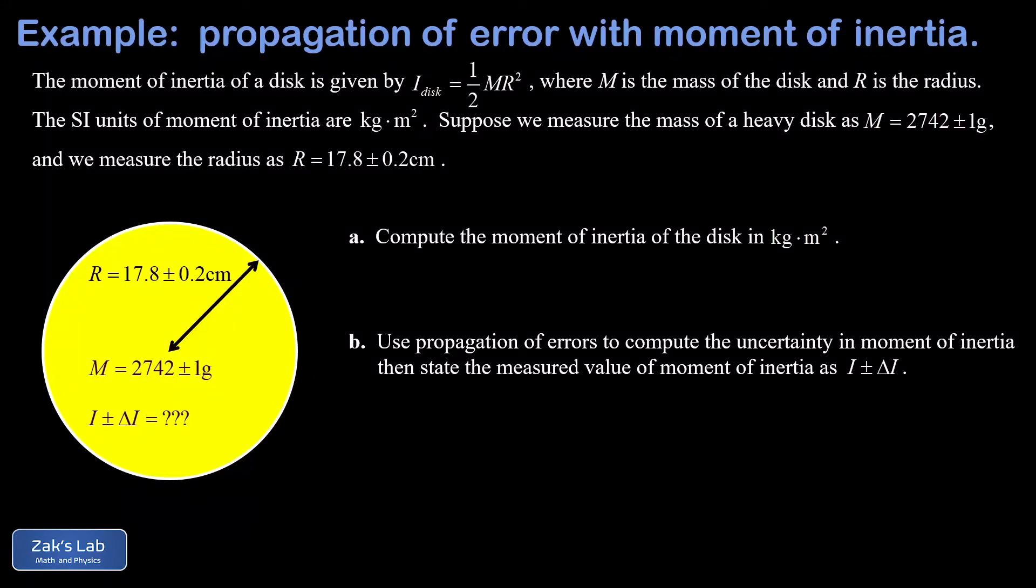In this video we're applying the propagation of error to measurements of a heavy disc. Given the measurement of mass with uncertainty and the radius with uncertainty, we're going to compute the moment of inertia of this disc with the uncertainty properly computed using propagation of errors formulas.